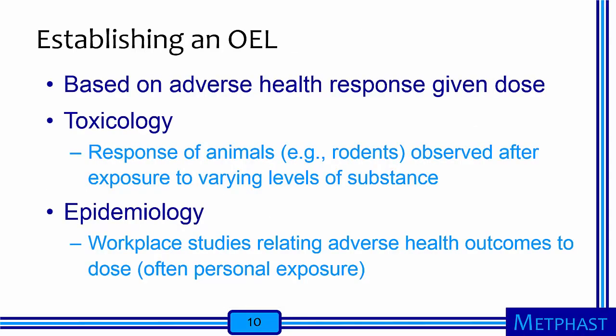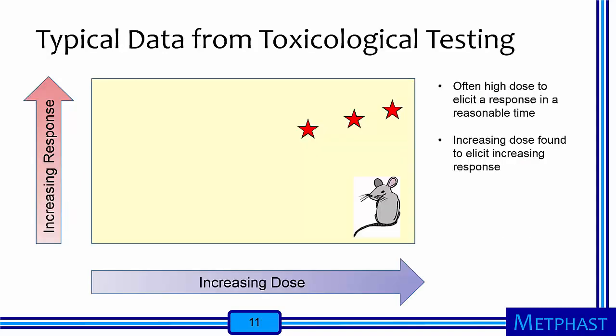The particular concentration established for a given OEL is based on adverse health response given a particular dose. This type of information comes from toxicology tests conducted in laboratories on animals, where the biological response of animals — typically rats or mice — is observed after applying various doses of a substance. It can also come from epidemiological studies that relate adverse health outcomes of workers to dose. Dose is often measured as concentration in the breathing zone — again, personal exposure. This graph shows typical data obtained from a toxicological test.